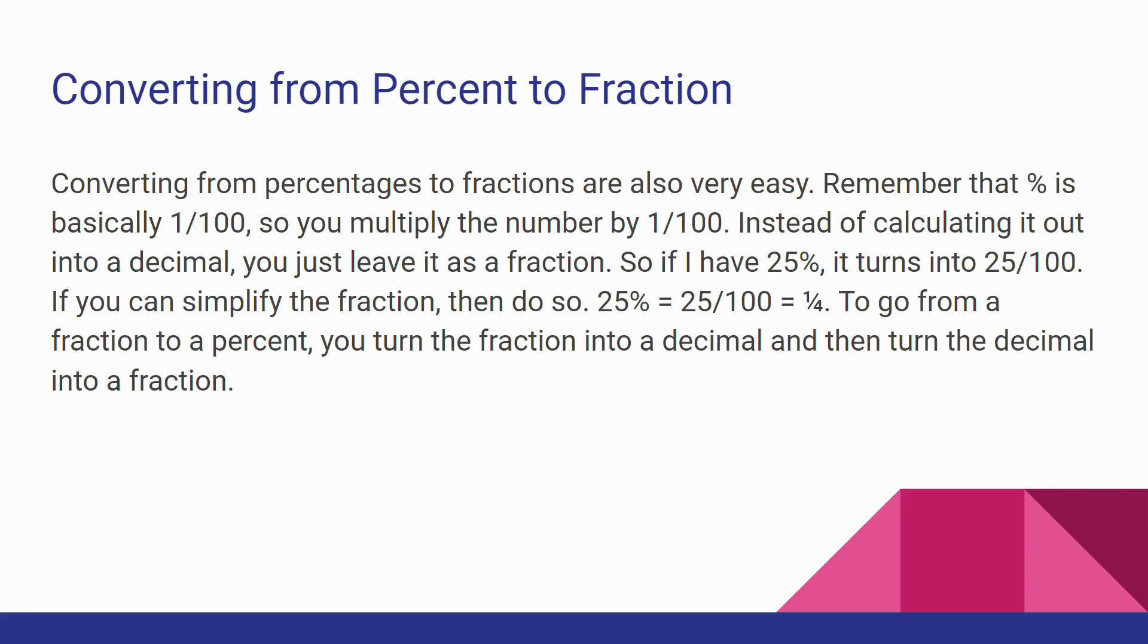And then you can simplify it by 25, so this would become 1 and this would become 4, so one-fourth. And we know that one-fourth is 25% and 25 over 100. So to go from a fraction to a percent, you just turn the fraction into a decimal and then turn the decimal into a percent.